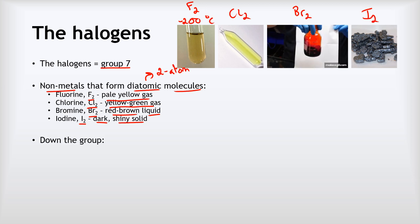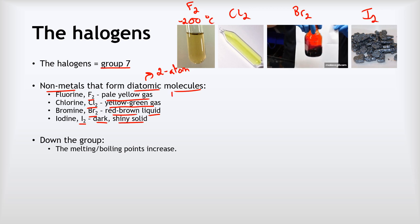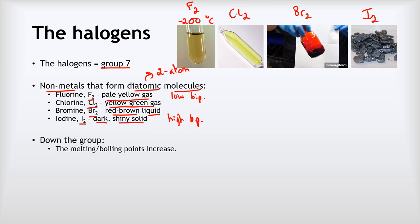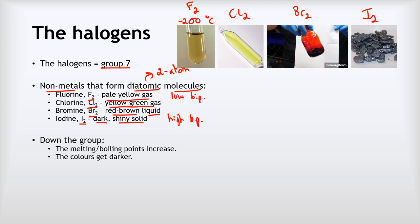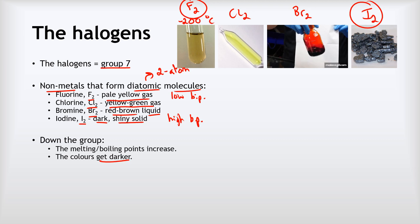There are a couple of trends we need to know with the halogens. As we go down the group, the melting and boiling points increase. We can see fluorine has the lowest boiling point and iodine has the highest, which is why they change from being gases to solid as we go down the group. The colours also get darker as we go down the group — fluorine is a really light pale colour and iodine is a very dark rich colour.